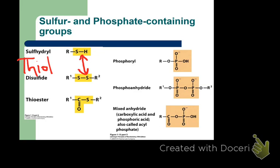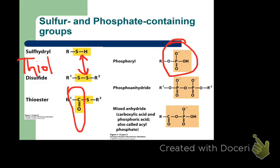A thioester is just like an ester except with sulfur. Carbons do not form double bonds with sulfurs — they do with nitrogens, but not sulfurs. Sulfur can form a double bond with oxygen but not carbon. Then we have the phosphoryl group, also called phosphate when an extra oxygen is added. Phosphoanhydride is like an acid anhydride but with phosphates. A mixed anhydride is a mixture between a carboxylic acid anhydride and a phosphoryl anhydride.